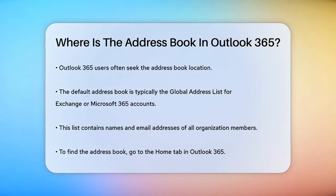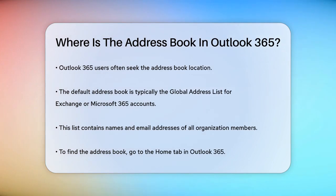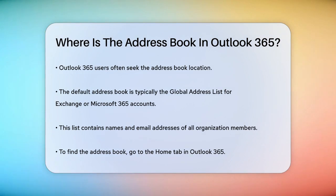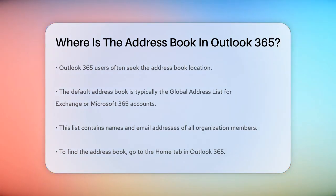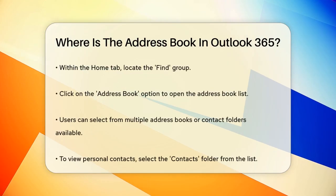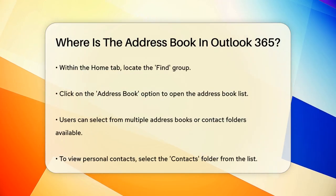When you open Outlook 365, you might notice that the default address book is often the global address list, especially if you're using an Exchange or Microsoft 365 account. This list includes all the names and email addresses of everyone in your organization.